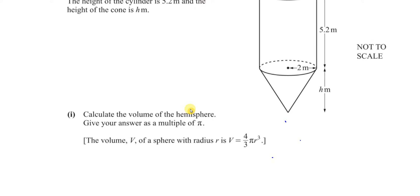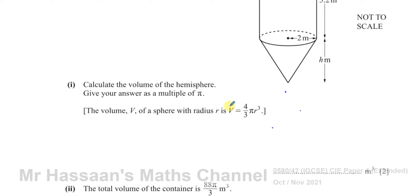The first part of the question says: calculate the volume of the hemisphere. Importantly, it also says to give your answer as a multiple of π. That's important — if we didn't read that, we would round to 3 significant figures by default, but here we must give our answer in terms of π, not to 3sf, otherwise we'd lose a mark.